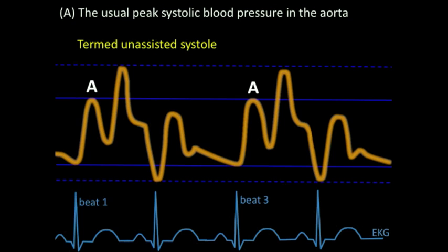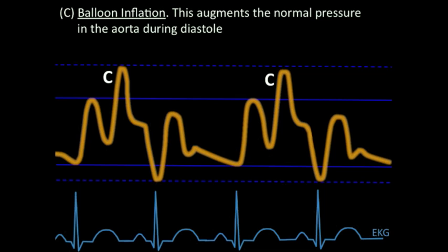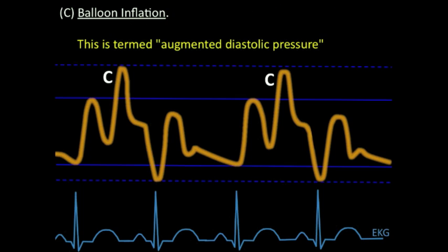Remember these patients are quite sick, so you won't see normal pressures of 120 mmHg — they'll be much lower. Next we see the usual dicrotic notch representing closure of the aortic valve. If you look closely, you'll notice the dicrotic notch of the assisted beat is slightly higher than that of the unassisted beats. During diastole, the balloon inflates and aortic pressure is increased — in fact, aortic pressure is highest in diastole during augmentation, as seen at letter C. The term for this is augmented diastolic pressure.